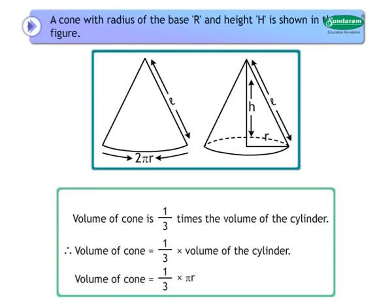Volume of the cone is equal to 1 upon 3 times the volume of the cylinder. Thus, volume of the cone is equal to 1 upon 3 into πR squared H.